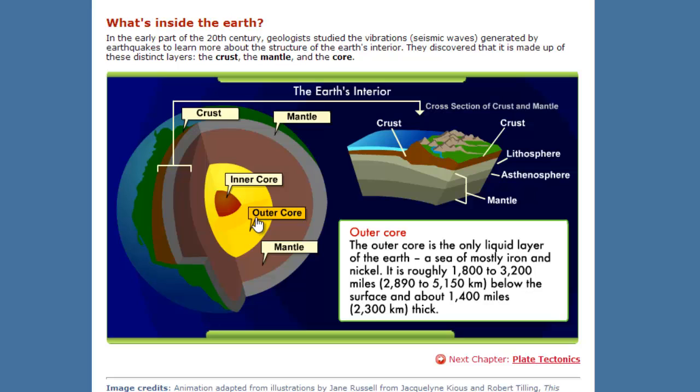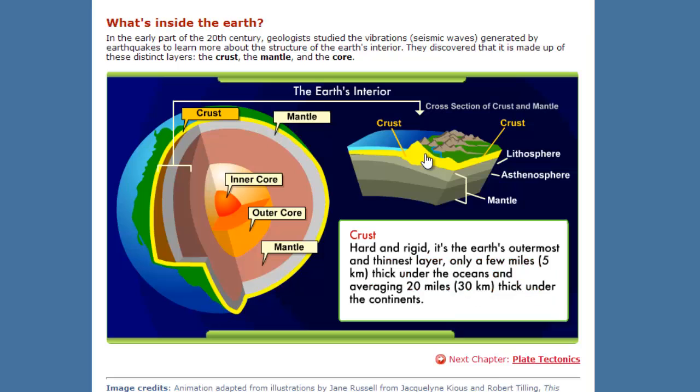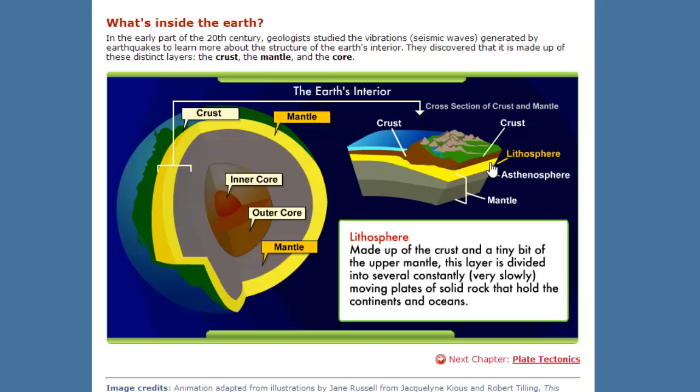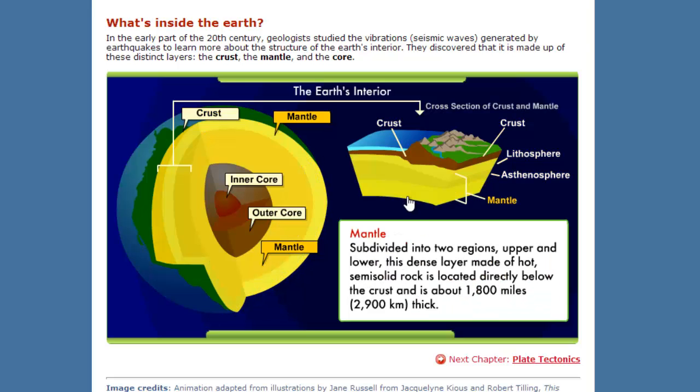Then moving on farther into the earth we've got the outer core, the only true liquid layer, a sea of mostly iron and nickel. And then finally we end up at the core, an extremely hot solid sphere of mostly iron and nickel. Again you can also see highlights over here they talk about the lithosphere again and the asthenosphere along with those other main layers.